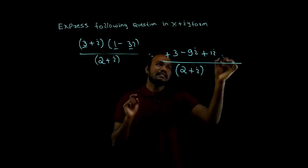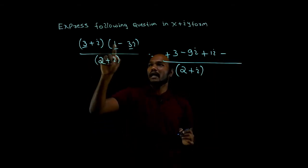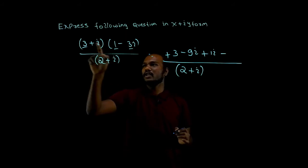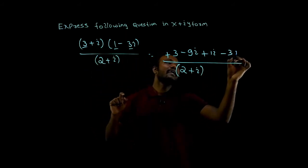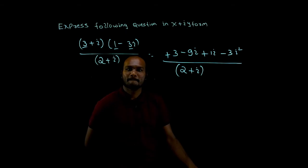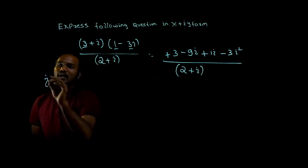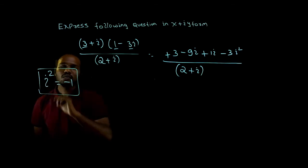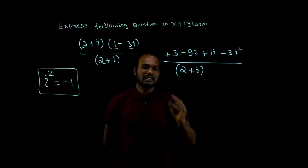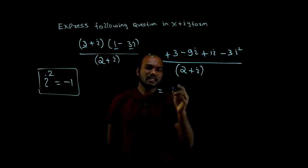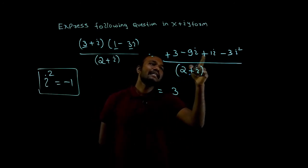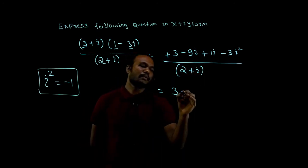3 into 1 is 3, i into i is i square. Now what we need to remember, i square value is minus 1. So what do we have? 3 minus 9 plus 1i, that is minus 8i.